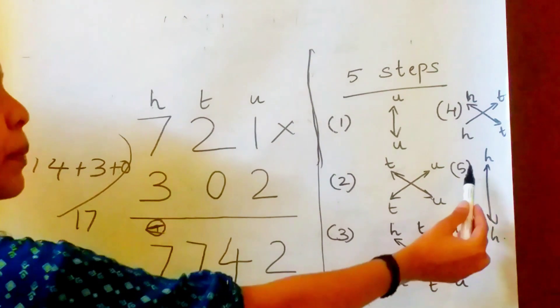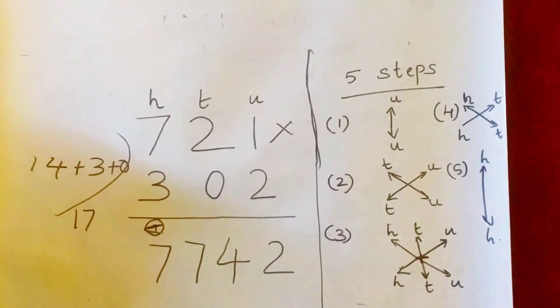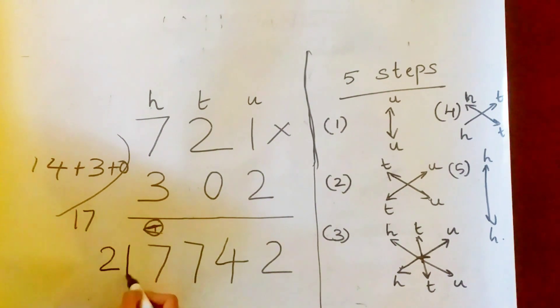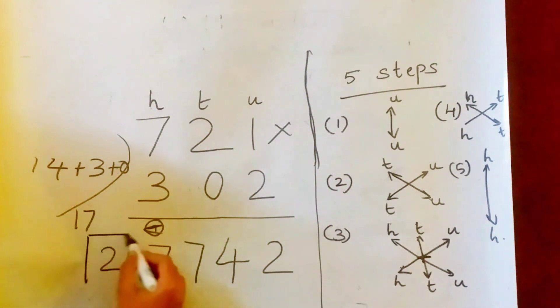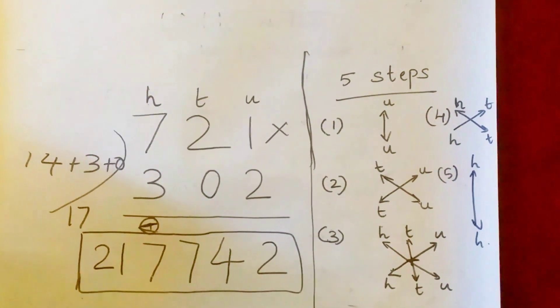And the last step, we are multiplying the hundreds place with each other. That is 7 into 3, which is 21. So 2, 1, 7, 7, 4, 2 is the answer to this question.